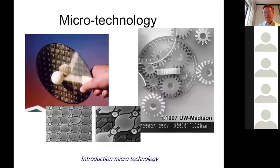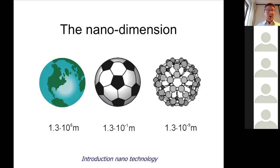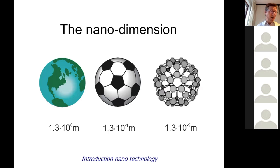You all know the microtechnology from microchips and micromechanics, and you also know the nanodimension. This is a picture with which you can basically explain to your grandmother what you are working on — your molecules. The ratio of the diameter of a small football relative to the diameter of the Earth is the same as going from the small ball to a molecule: a factor of 10 to the power of 8.